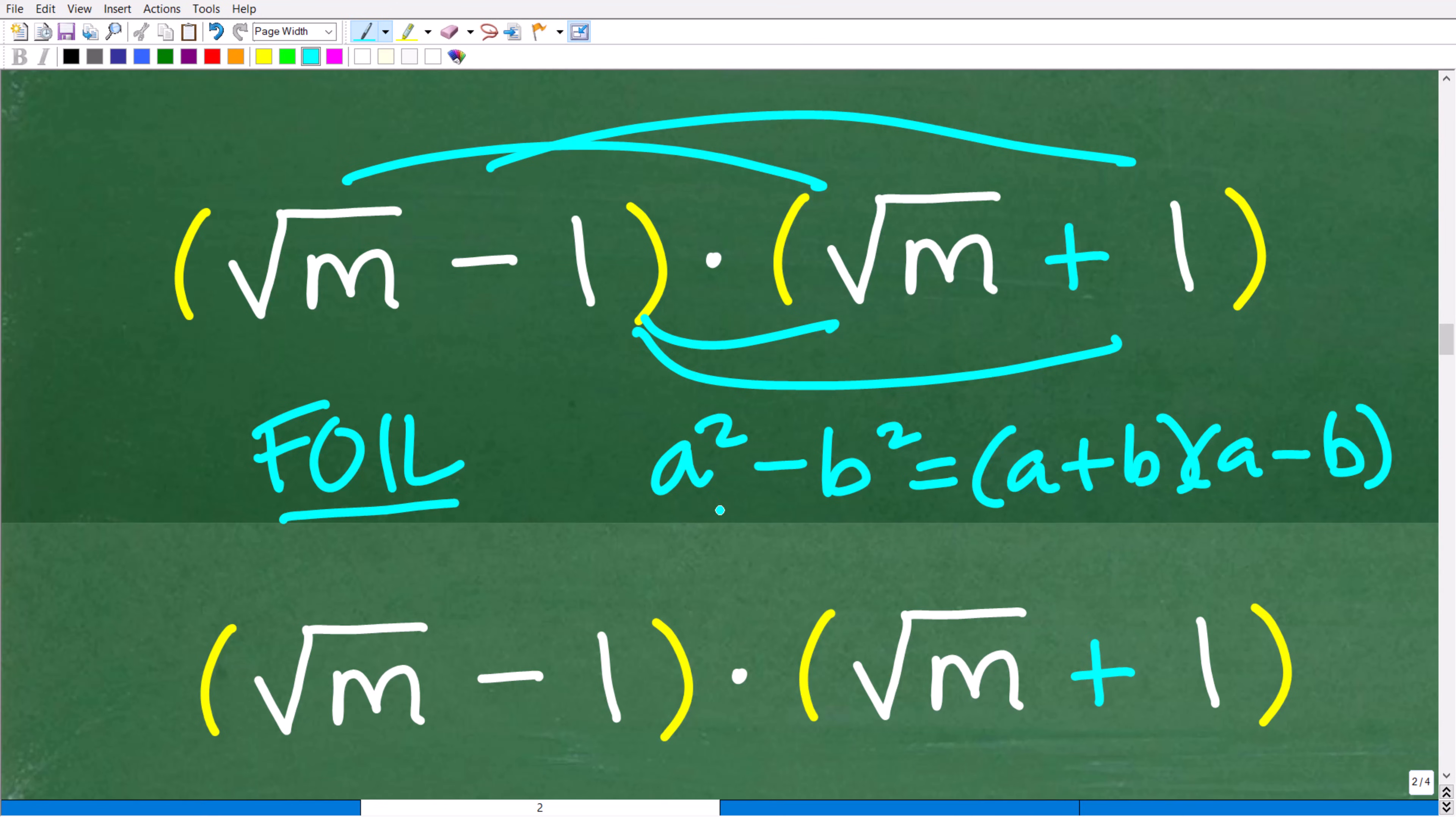So these are our two options. But this option here, the difference of two squares, you should understand this right here, especially if you are an algebra student, because this is absolutely a must-know formula for factoring.